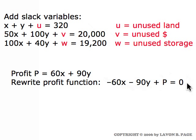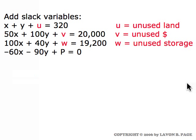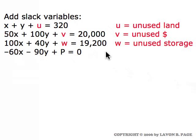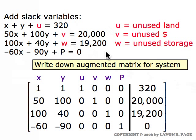These four equations — the three that involve the slack variables and the profit equation written in standard form — make up what's called the initial simplex tableau. What we do is write down the augmented matrix for that system, using the term augmented matrix in exactly the same way we used it in Chapter 1.